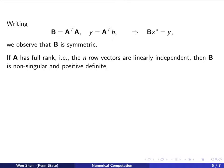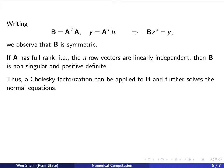If, in addition, we have that A is full rank, this means the n row vectors are linearly independent, then the B matrix formed will be non-singular and positive definite. Thus, a Cholesky factorization can be applied to B, and one can further solve the normal equation utilizing that factorization.